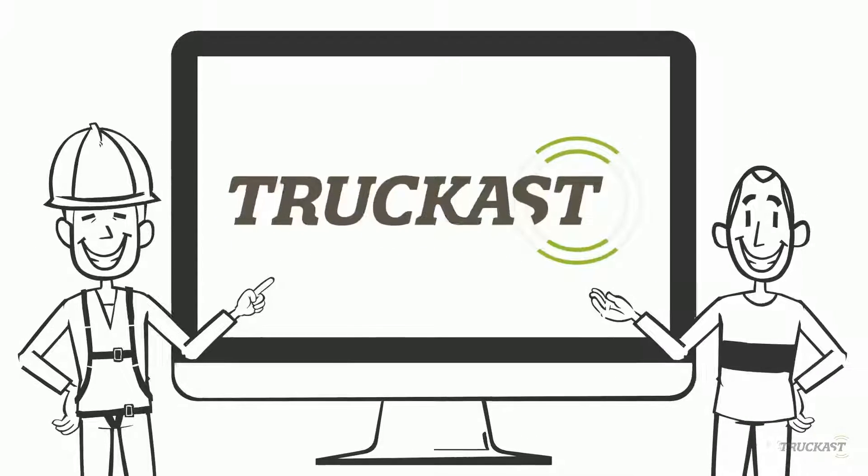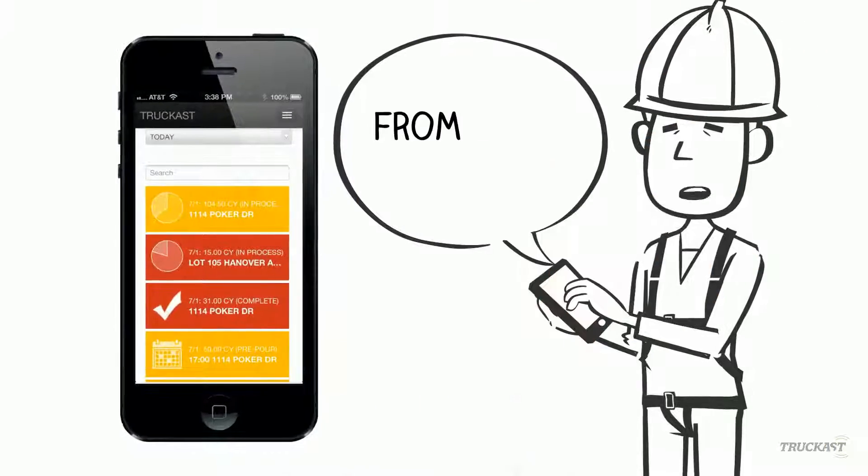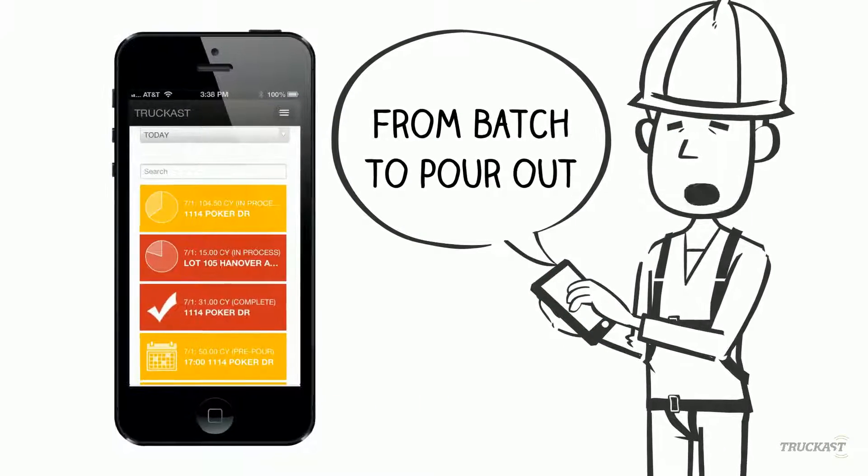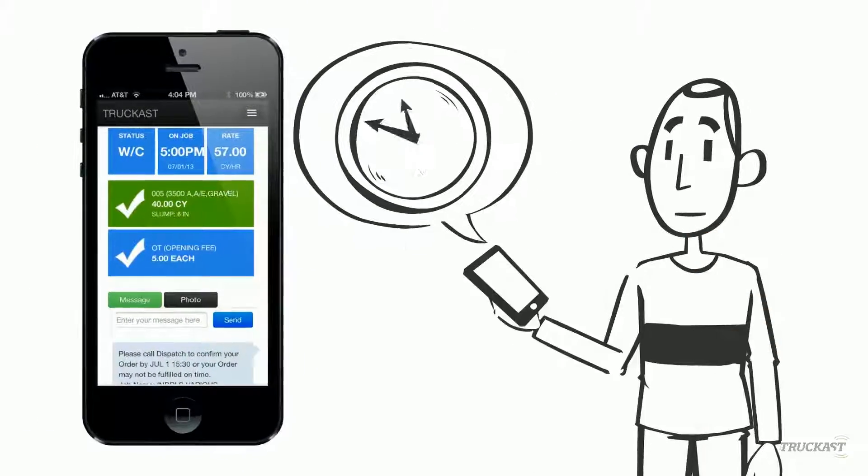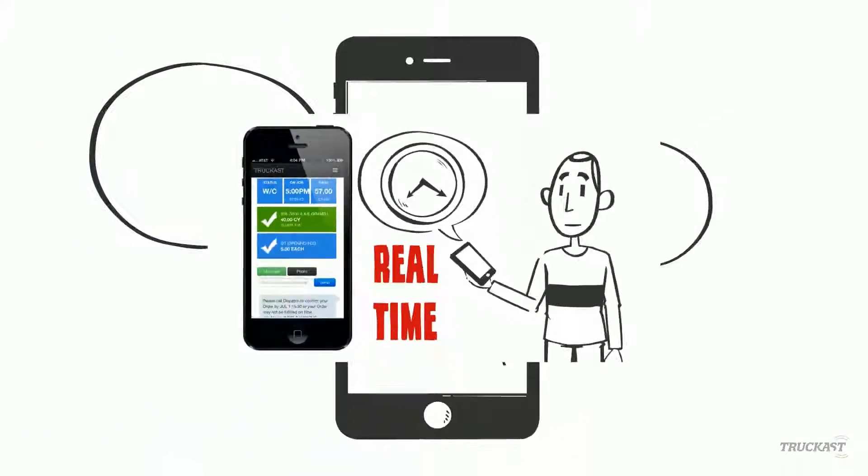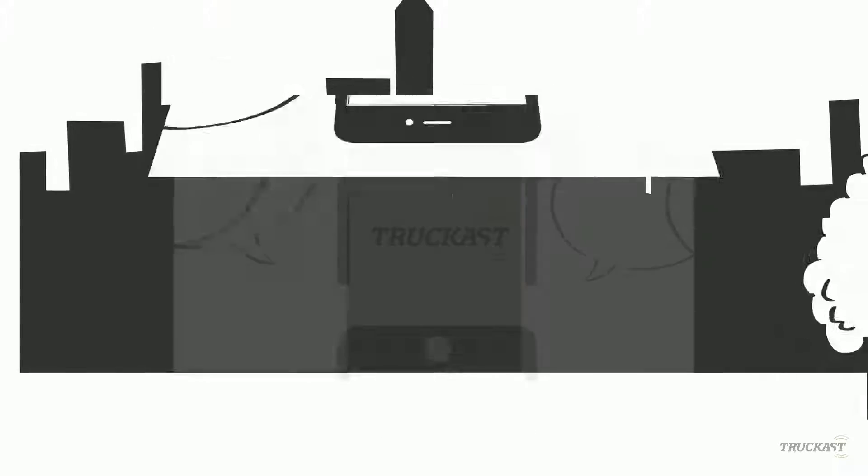With TruckCast, both Matt and Rich can access the same real-time order to job visibility from batch to pour out. View where the concrete trucks are on a map. Monitor key performance indicators in real-time. Communicate within TruckCast, which reduces call volume.